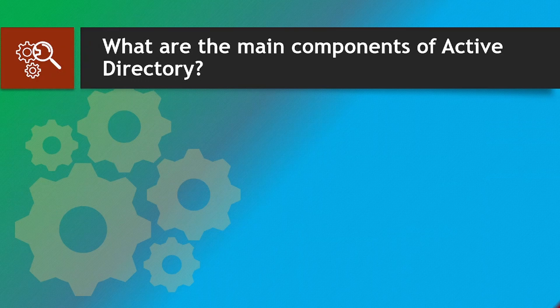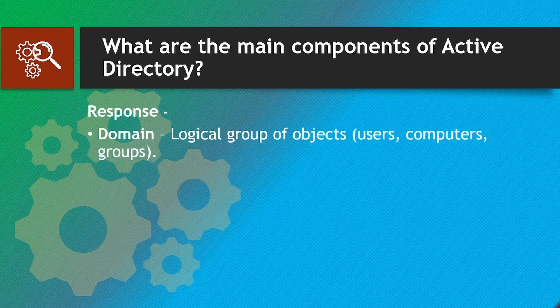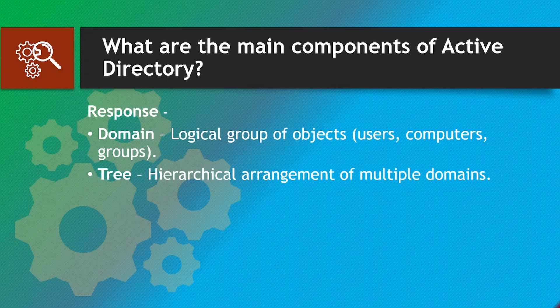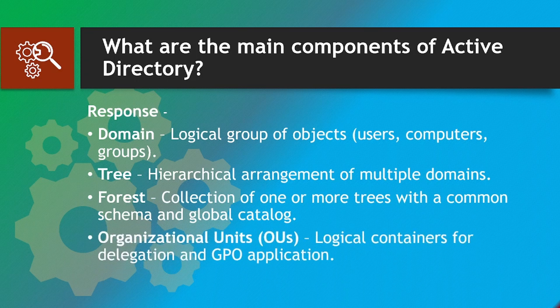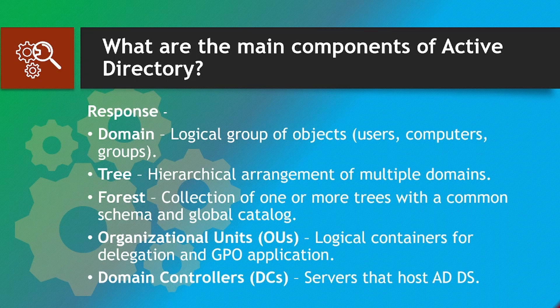First question: What are the main components of Active Directory? Response: Domain — a logical group of objects like users and computers. Tree — a hierarchical arrangement of multiple domains. Forest — a collection of one or more trees with a common schema and global catalog. Organizational Units (OUs) — logical containers for delegation and GPO application. Domain Controllers (DCs) — servers that host AD DS.